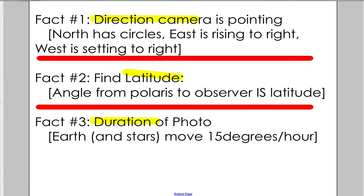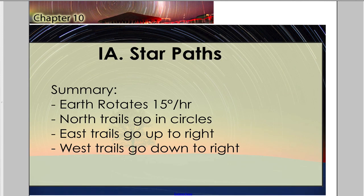Here are some facts you can pause to read through. Fact one is the direction the camera is pointing. You should be able to determine from one of these pictures: the direction the camera is pointing, the latitude of the observer, and the duration — how long the picture took to capture. Overall, you should know the Earth rotates at 15 degrees per hour. If you're looking north, the trails go in circles. If you're looking east, they go up to the right. If you're looking west, they go down to the right. That's what you should know about the path of stars.